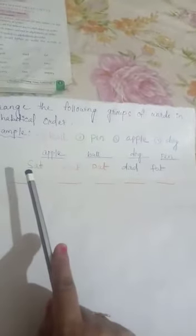A, B, C, then D. D letter word is there. Yes, here D letter word is there. D for dad. So we will write here that dad: D, A, D, dad.